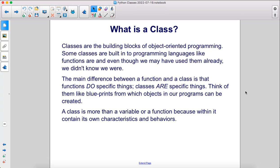The main difference between a function and a class is that functions do specific things. Classes are specific things. Think of them like blueprints from which objects in our programs can be created. A class is more than a variable or a function because within it contains its own characteristics and behaviors.